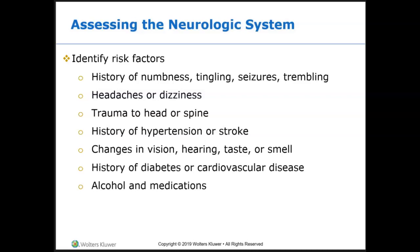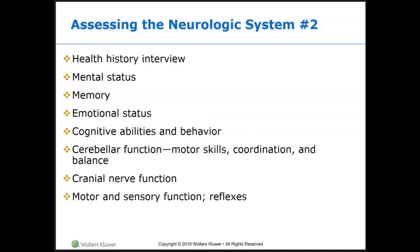Assessing the neurological system: look for risk factors such as history of numbness, tingling, seizures, trembling, headaches, dizziness, trauma to the head or spine, history of hypertension or stroke, changes in vision, hearing, taste, or smell, and history of diabetes, cardiovascular disease, or medications that could cause changes. We will assess the health history, mental status review, memory — immediate, short-term, and long-term — emotional status, cognitive function, behavior, cerebral function, motor skills, coordination, balance, cranial nerve function, motor function, sensory function, and reflexes.